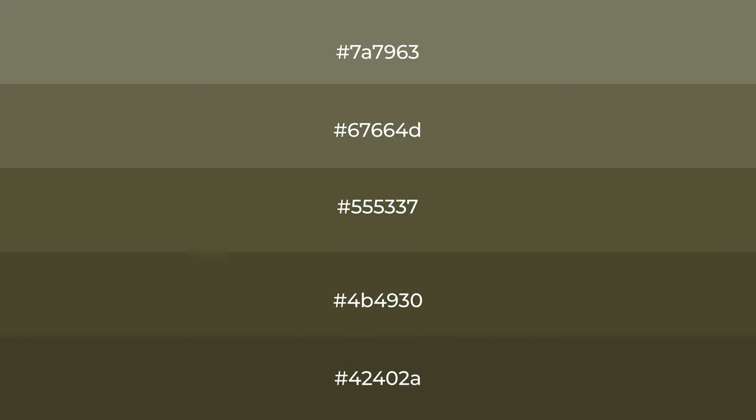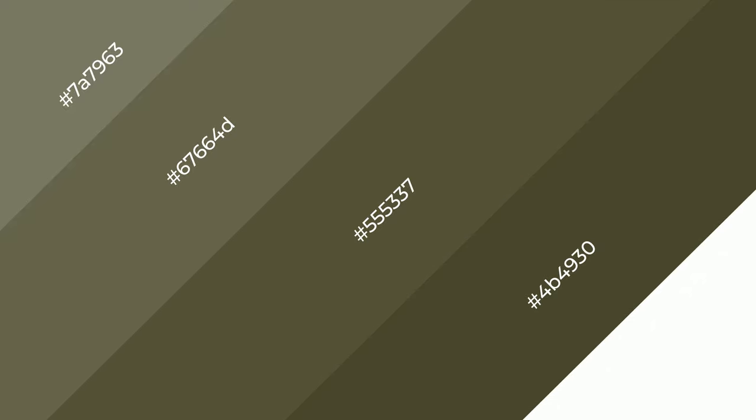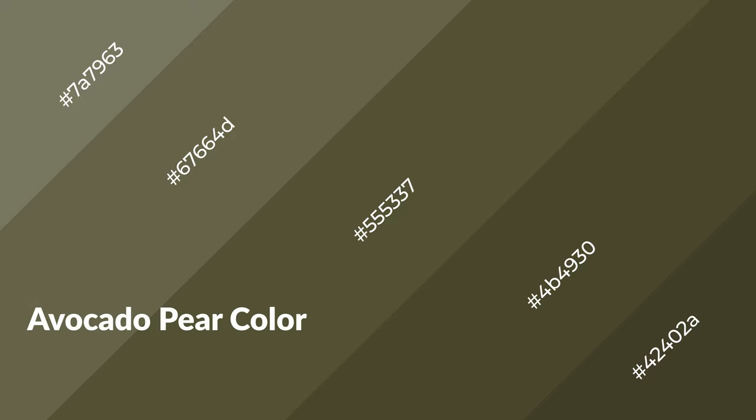To generate shades of a color, we add black to the color, and it is used in patterns, 3D effects, and layers. Shades create depth and drama. Avocado pear is a warm color and it emits cozier and active emotions.